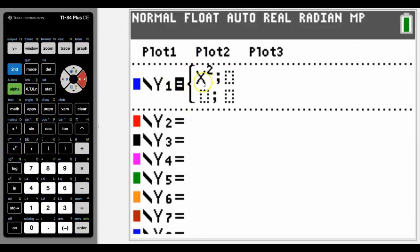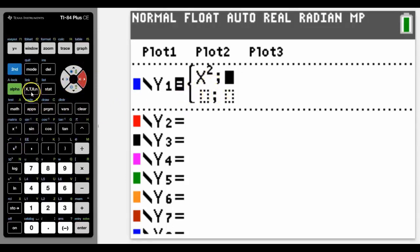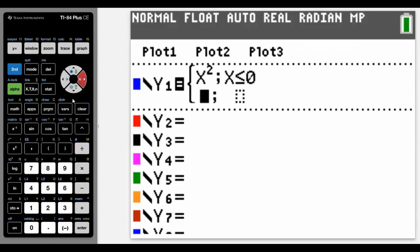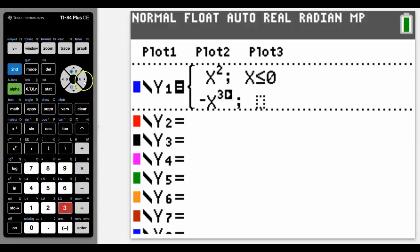In this case, I'm going to do a quadratic where X is less than or equal to zero. So we're going to go X. Now to get the less than or equal to, that's in Test, and here it is, number six. Arrow across or down, and negative X cubed.